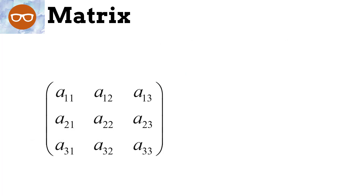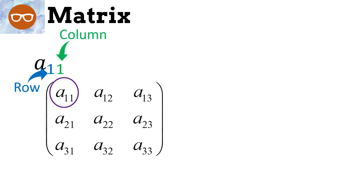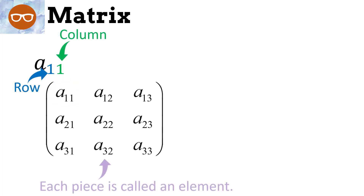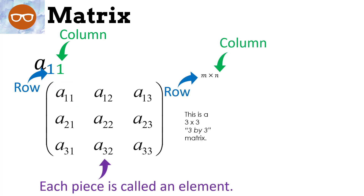Let's look at the different pieces of a matrix. Let's look at element A11. The first subscript tells us it's in row 1, and the second tells us it's column 1. Each piece is called an element. Whenever we talk about a matrix, we always say a number by a number — the first number is the row and the second number is the column. So we would say this is a 3 by 3 matrix, because there are 3 rows and 3 columns.